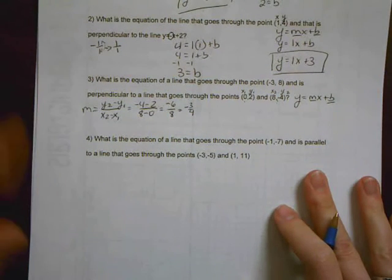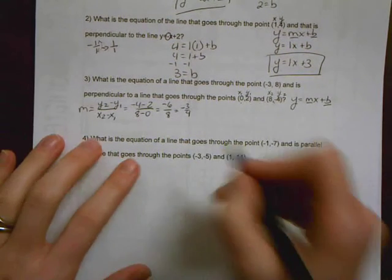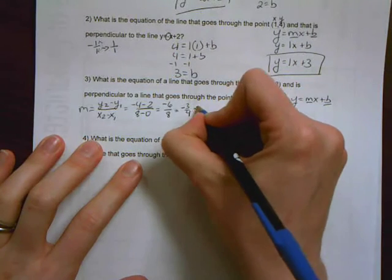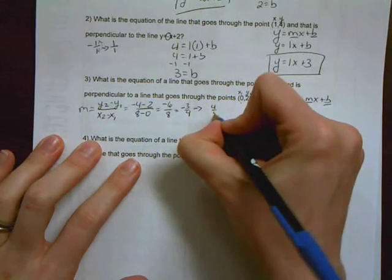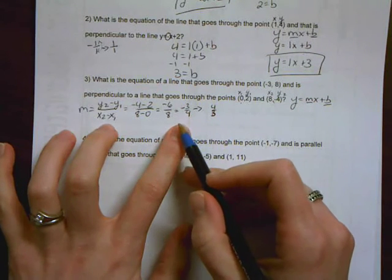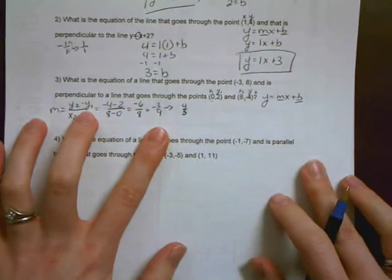Now, that is the slope of the line perpendicular to the line I actually want, which means that I need to get the negative reciprocal of this, which means I'm flipping this over and changing the sign. The original problem was a negative, so my new one is going to be positive.